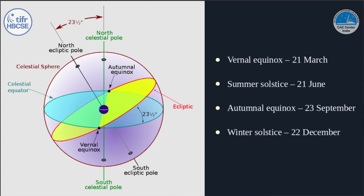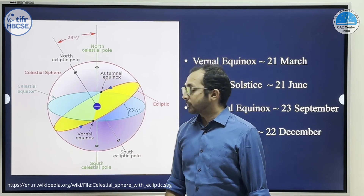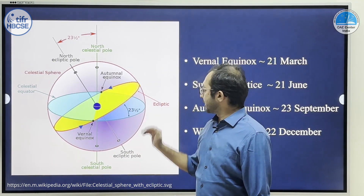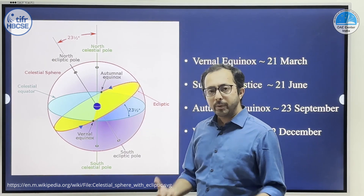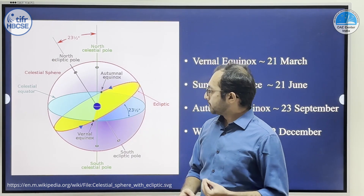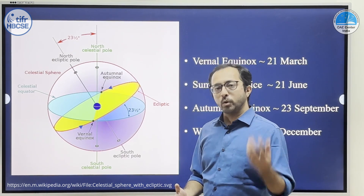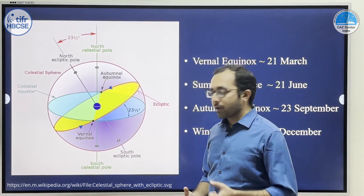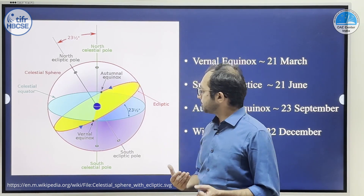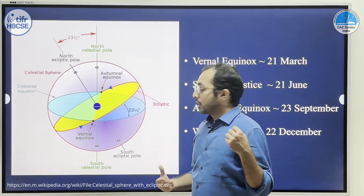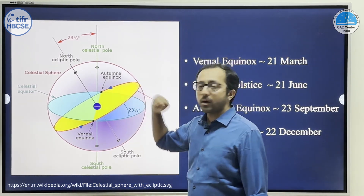On the celestial sphere, you are seeing the yellow plane which is the ecliptic plane — the plane of the earth's motion around the sun. The blue plane is the celestial equatorial plane, bounded by the celestial equator. These two are tilted with respect to each other at an angle of around 23.5 degrees. As we see from earth, the sun appears to go around the earth daily because of the rotation of earth and throughout the year because of the revolution of earth. The celestial equator and the ecliptic cross each other at two points called as the vernal equinox and the autumnal equinox.